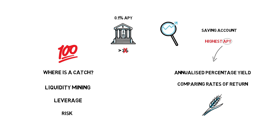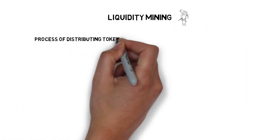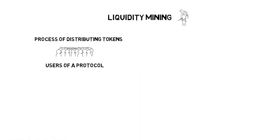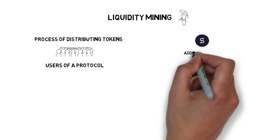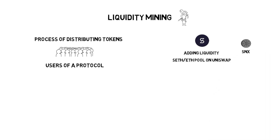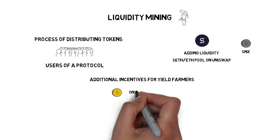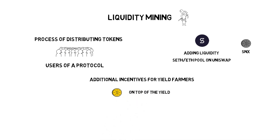Liquidity mining is a process of distributing tokens to the users of a protocol. One of the first DeFi projects that introduced liquidity mining was Synthetix, which started rewarding users who helped with adding liquidity to the sETH pool on Uniswap with SNX tokens. Liquidity mining creates additional incentives for yield farmers as the token rewards are added on top of the yield already generated by using a certain protocol. Depending on the protocol, these incentives may be so strong that farmers may actually be willing to lose on their initial capital just to get more rewards in the distributed tokens, making their overall strategy highly profitable.